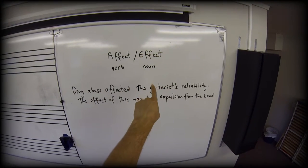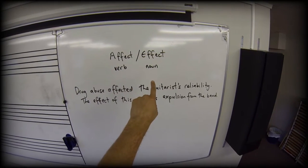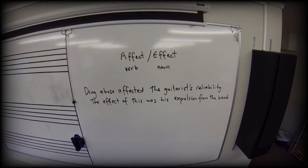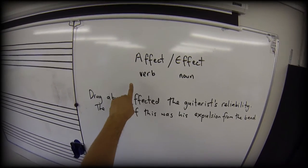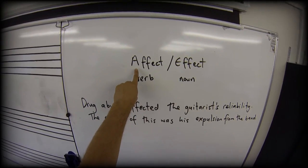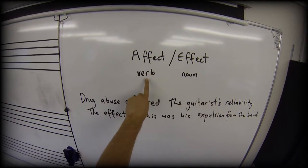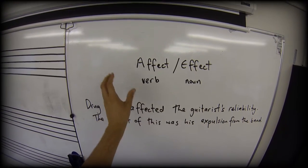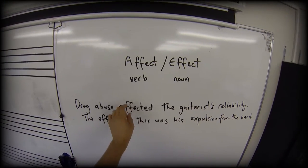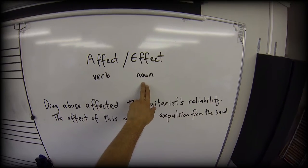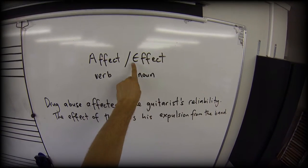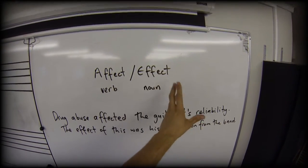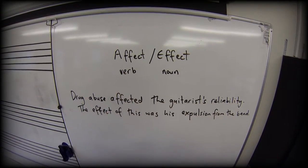Affect and effect — I read a really useful way of differentiating between these. In almost every case, affect with an A is a verb: something is getting done. And in almost all cases, effect is a noun — it is the result of something getting done.